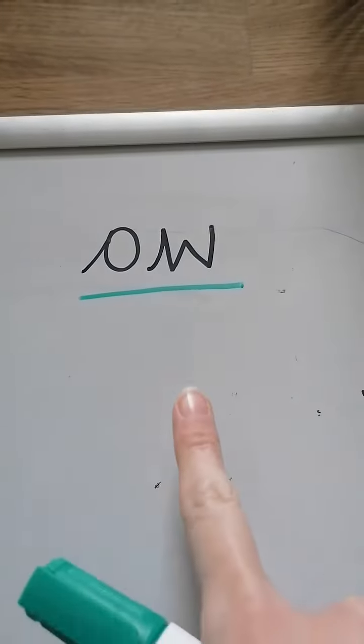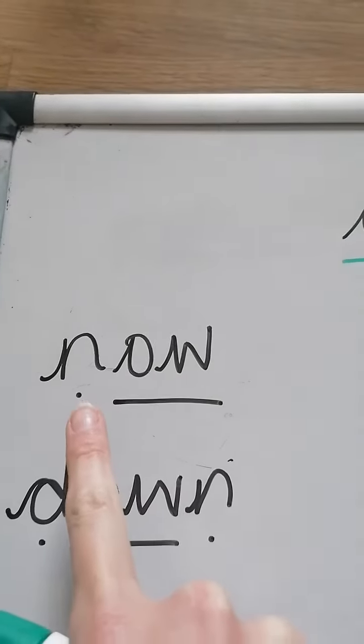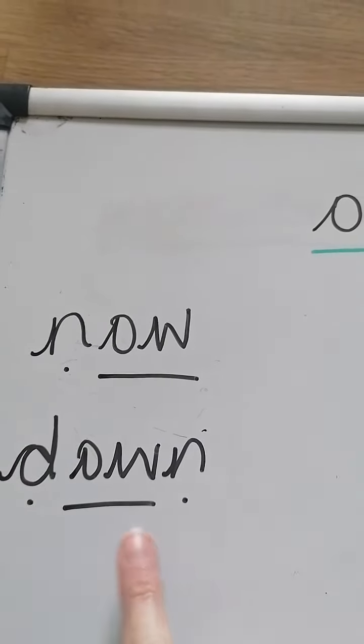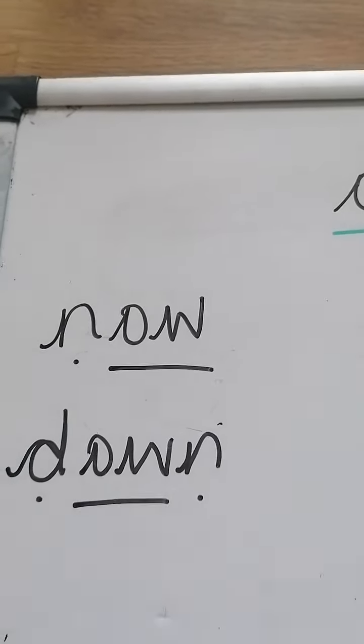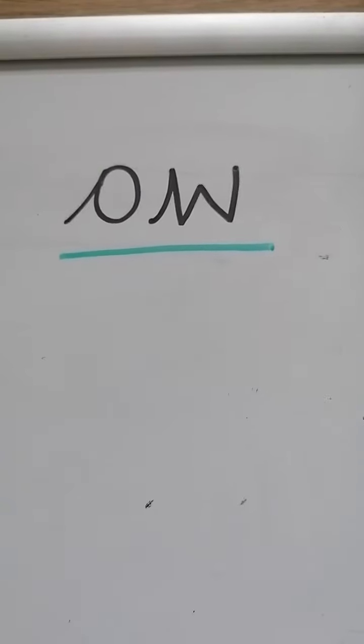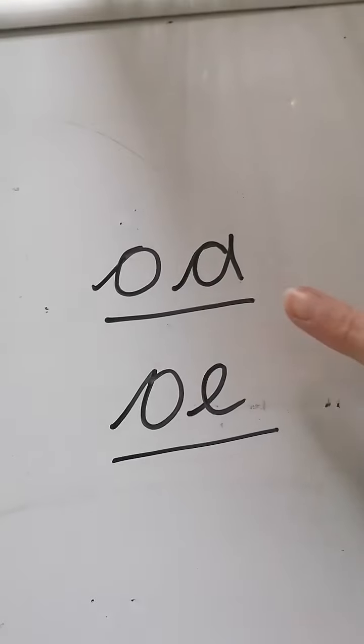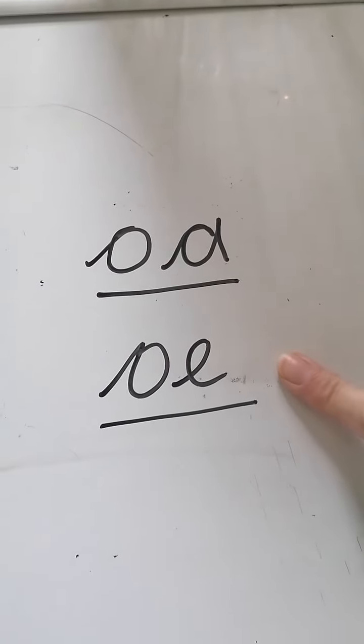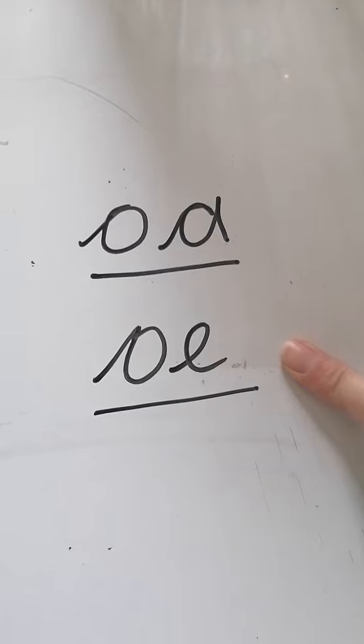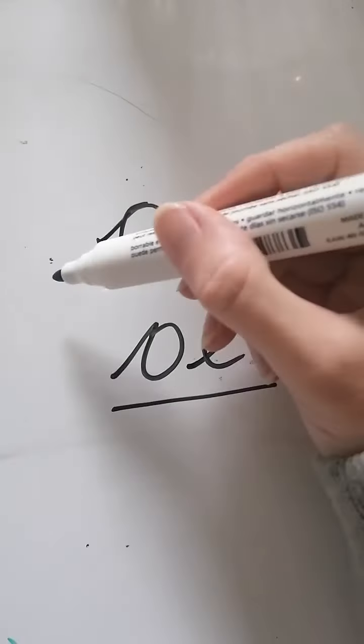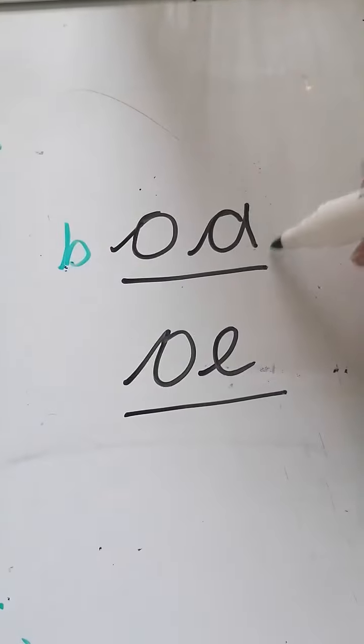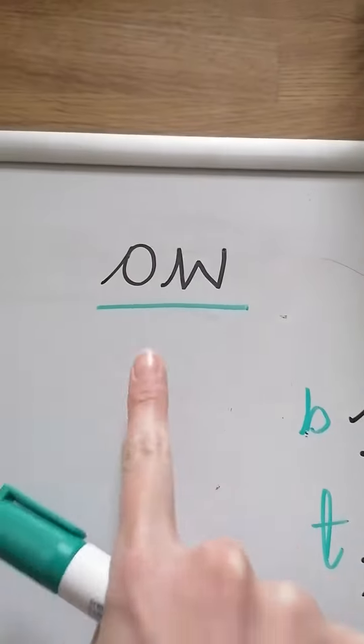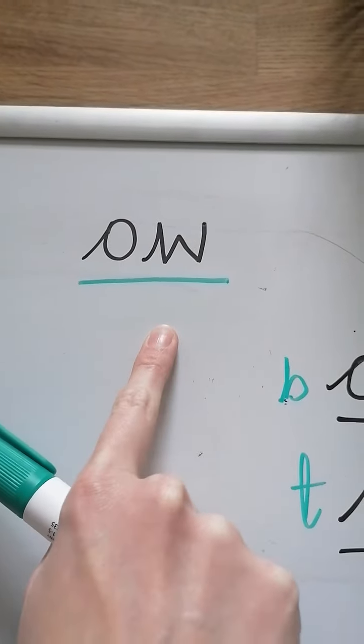So you know it makes the ow sound like in now, now and down, down. But it also makes the ow sound. Now you already know ow like in boat. We learned that in reception and we've just learned in year one this digraph ow like in tow. So like in boat and tow. So this digraph makes ow and it makes o.